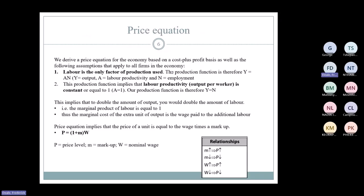Now for the price equation. There are two things in this model: wages and prices. Wages are what employees ask for; prices are what firms charge for the goods and services that employees ultimately buy. We derive the price equation for the economy on a cost-plus-profit basis — a simplifying assumption. If you continue with economics, you'll encounter much more complex models, but here we use this straightforward approach.